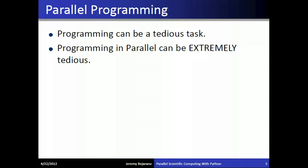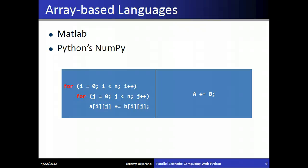A note about learning parallel programming and doing so with Python: programming is usually a tedious task, especially in languages like C or Fortran, and parallel programming can be really tedious. Some people joke and refer to it as schizophrenic programming because it's like multiple voices in one head. Array-based languages are popular in the scientific community because they allow for a lot of convenience in programming mathematics.